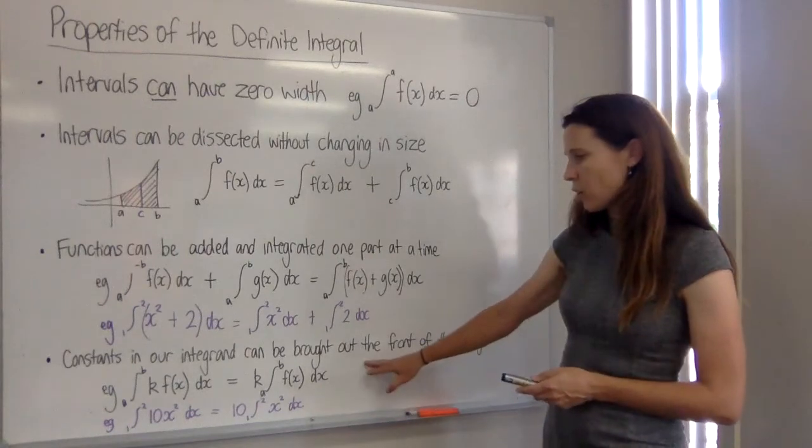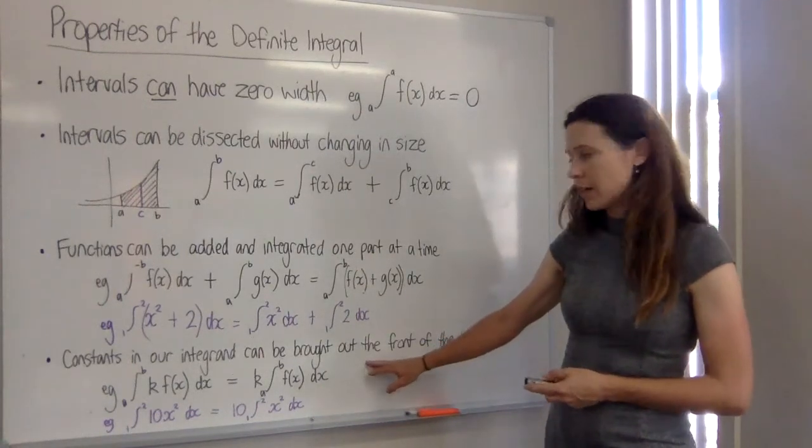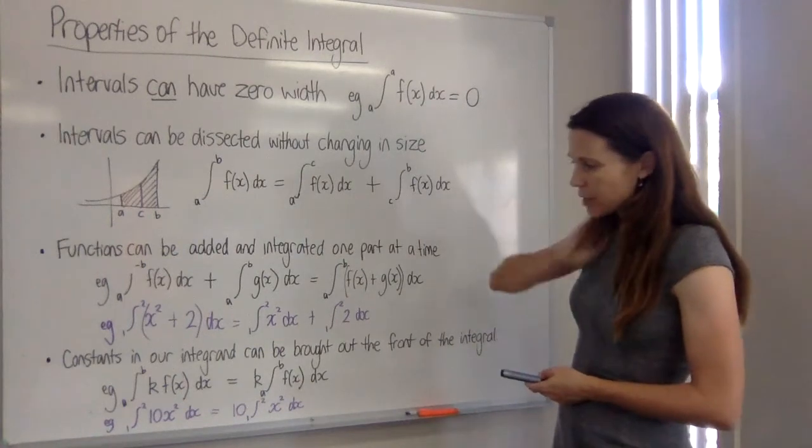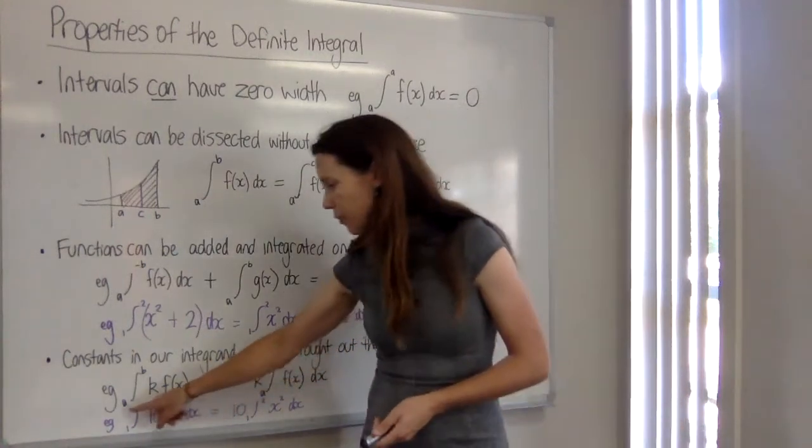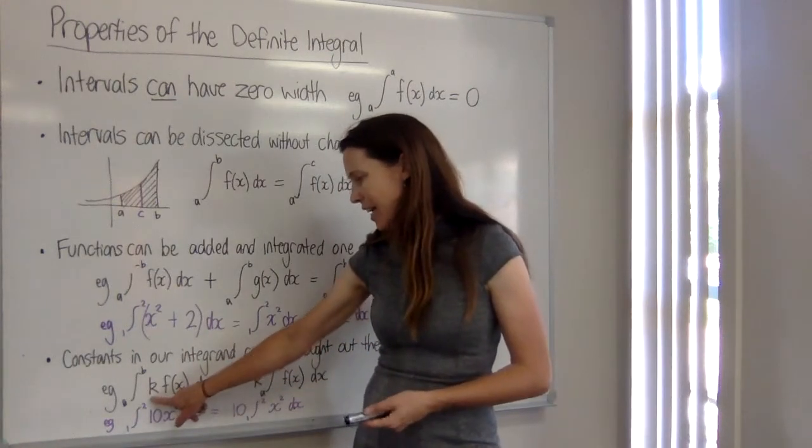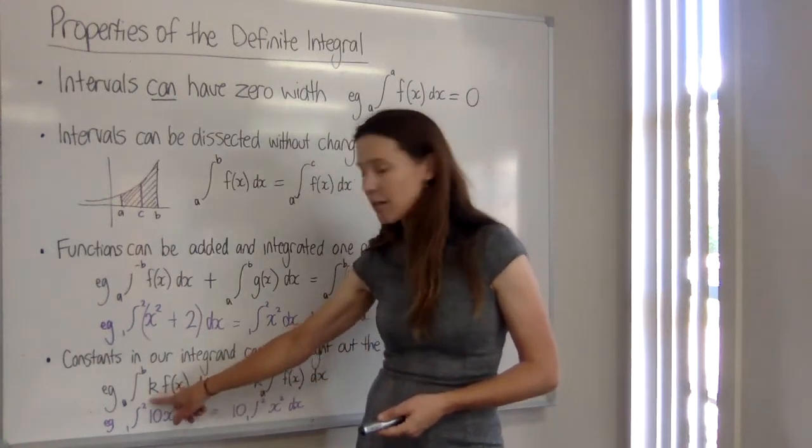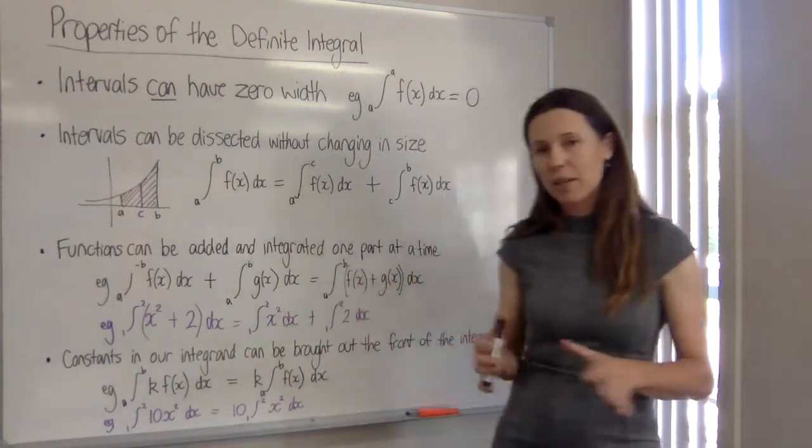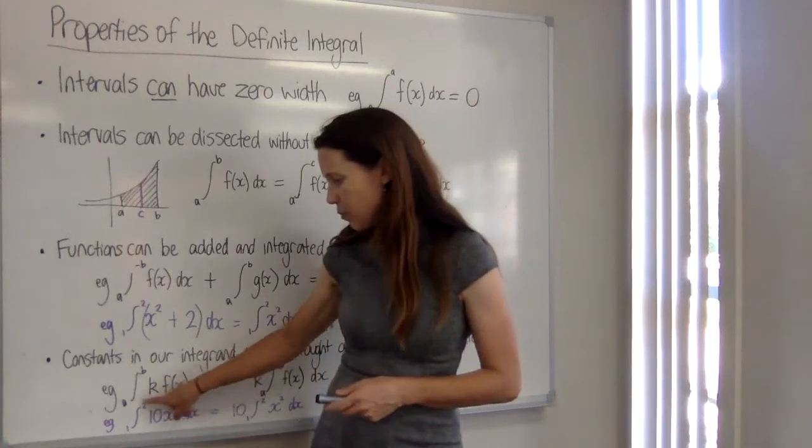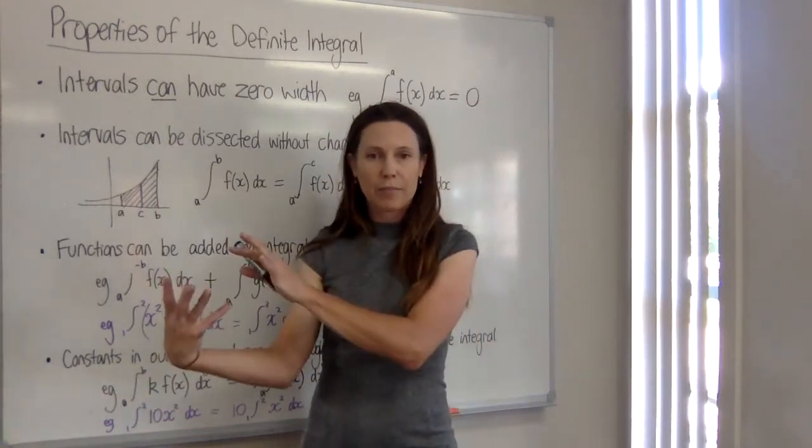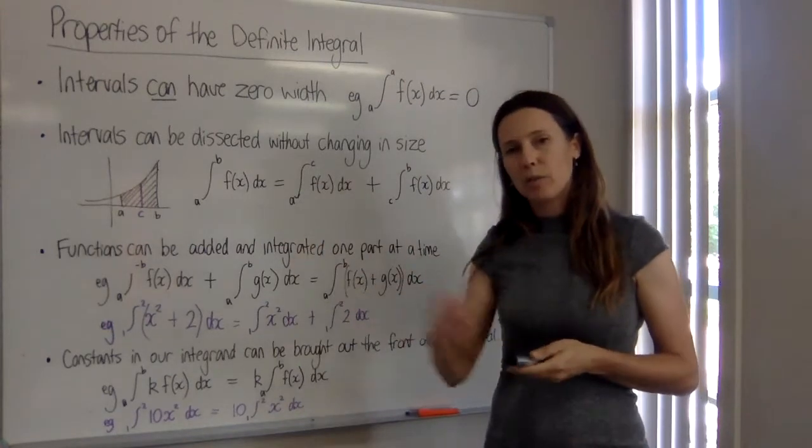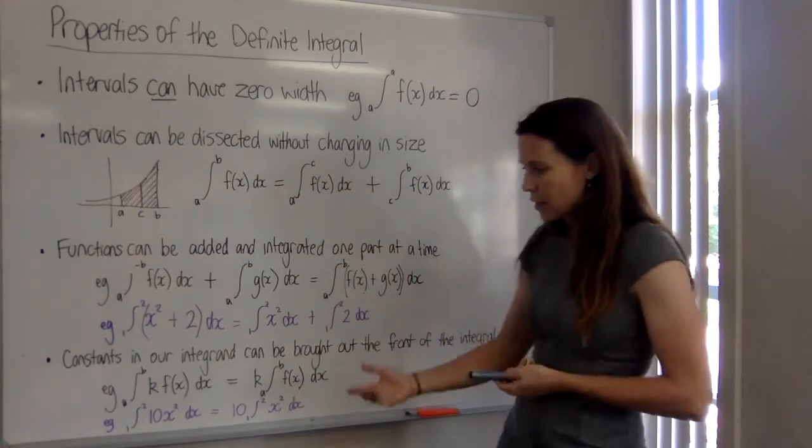The other thing we can do is we can bring constants of the integrand out the front of the integral. So for example here, I've got it written as a rule. From a up to b, our upper and lower bounds, we have k f of x dx. Now the k has to be a number, a constant. It can't be another value of x or it wouldn't work. But if we like, we can take that k and bring it out the front of the entire thing and work out our entire integral and then multiply it by that constant at the end.